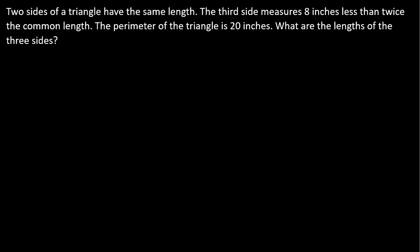Two sides of a triangle have the same length, and the third side measures 8 inches less than twice the common length. The perimeter of the triangle is 20 inches. What are the lengths of the three sides? If you're watching this for review, I recommend you pause the video and draw the setup of this situation yourself.